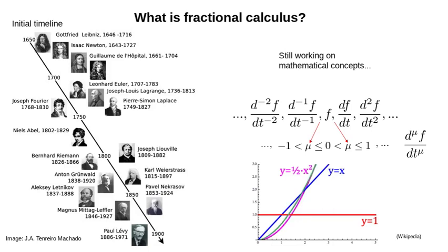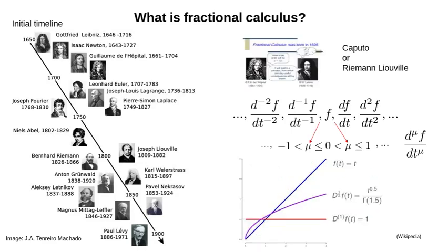Considering the identity function, the green line is dancing between the first integral and the first derivative of the function when the order of derivative is changing between minus 1 and 1. When it is half, we have a half derivative of this simple function, which is the purple curve shown in the figure.